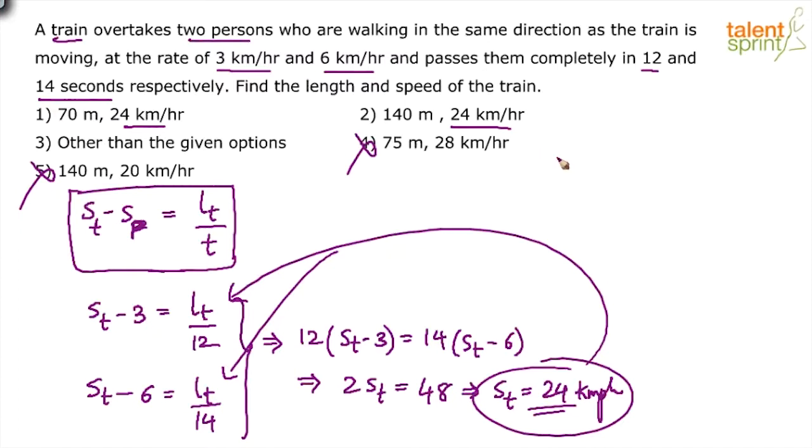So speed of the train, 24 minus 3 equals to length of the train by 12. But one problem here is if you see the left hand side, 24 minus 3 is in kilometers per hour. On the right hand side, we have 12 which is in seconds. And you see the length of the train in the options is given in meters.